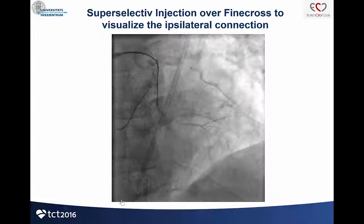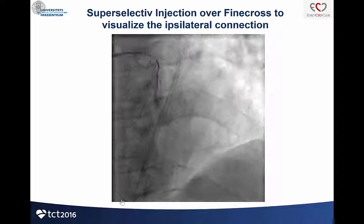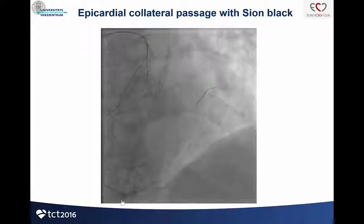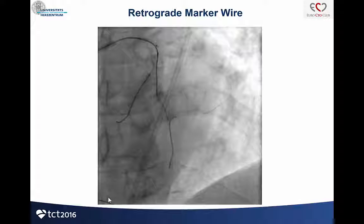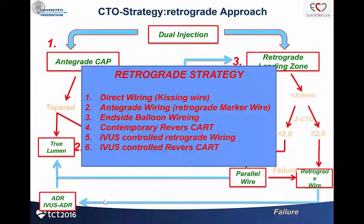I show you next a super-selective injection in this diagonal. You can see very nice connections to the distal landing zone. The question is: can these connections help me for my procedure? It was not complicated to pass here with the Sion wire, and I could bring the Sion wire down to the LAD. So I had something like a marker wire situation. I then tried to penetrate again towards the retrograde wire, but I failed.